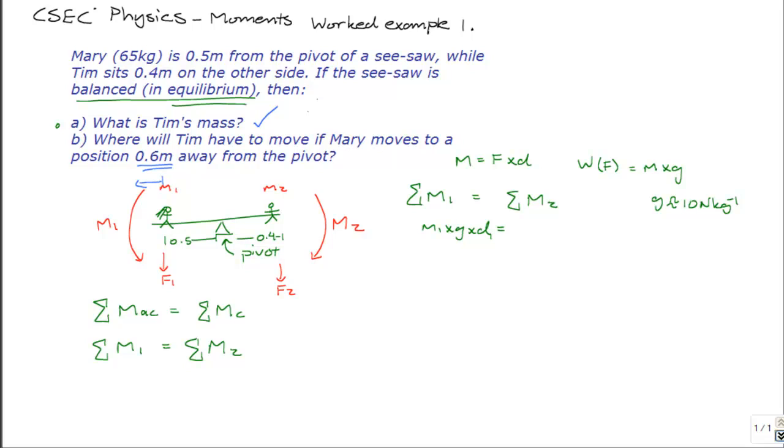So, her new position is 0.6 meters away, so let's substitute the values that we have. Tim's mass, we now know, is 81.25 kilograms. We don't know his new distance from the pivot, so when we solve for d2, we get that d2 is equal to 65 times 10 times 0.6 divided by 81.25 times 10.